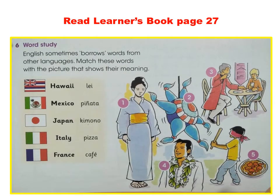Please read the learners book page 27 and you will find a picture like this. English sometimes there are words from other languages — match these words with the picture that shows their meaning.